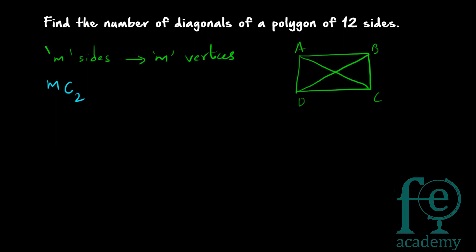Note here that by joining vertices A and D you are not getting a diagonal but a side of the polygon. Similarly, joining A and B, or B and C, or C and D also gives a side, not a diagonal. So mC2 gives you both sides and diagonals. In order to get the number of diagonals you have to subtract the number of sides. So mC2 minus m gives the number of diagonals for a polygon of m sides.